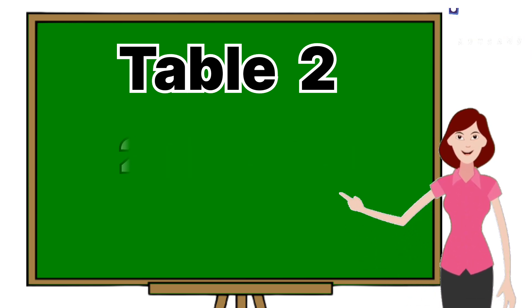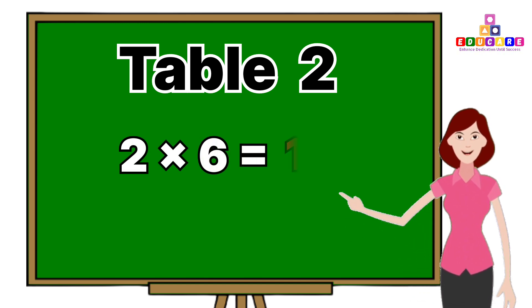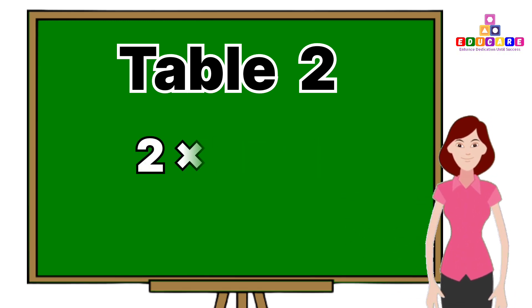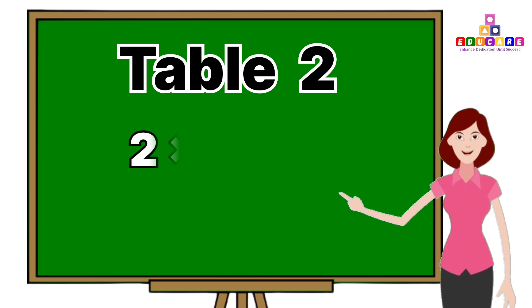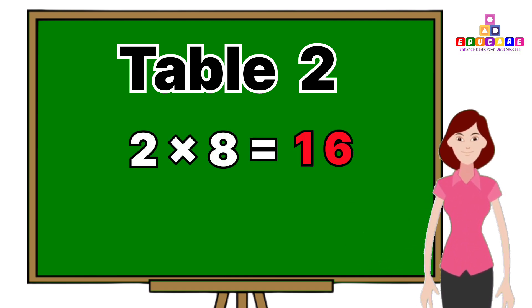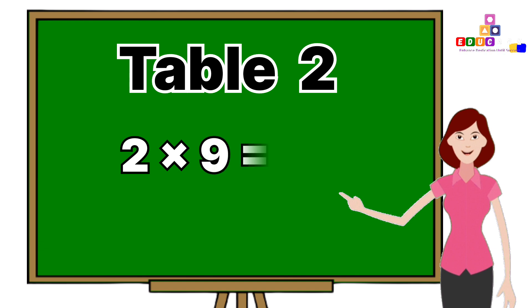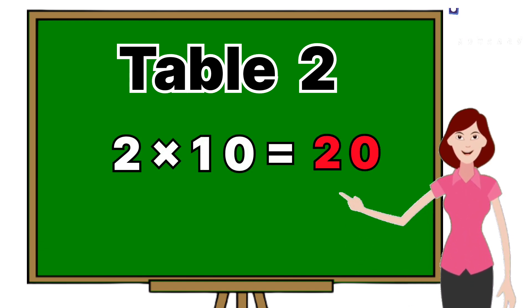2 sixes are 12, 2 sevens are 14, 2 eights are 16, 2 nines are 18, 2 tens are 20.